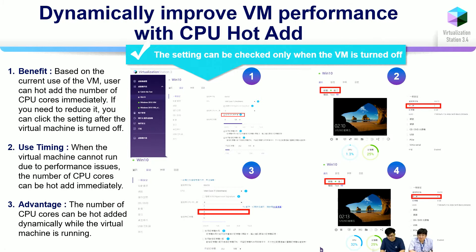Dynamically improve VM performance with CPU hot-add. The user benefit is that based on the current use of the VM, the user can hot-add the number of CPU cores immediately. Step one: your VM needs to be turned off, then click the function. Step two: turn on the virtual machine and choose how many CPU cores you want to hot-add — the origin is two cores. Step three: hot-add to four cores. Final: finished. If you need to reduce it, you can click the setting after turning off the virtual machine. This is useful when the virtual machine cannot run due to performance issues.